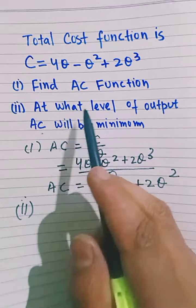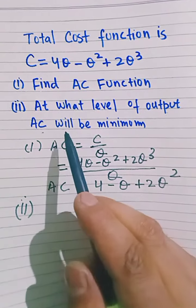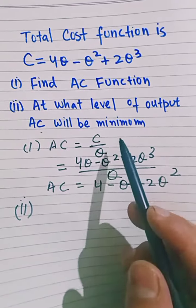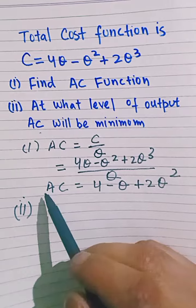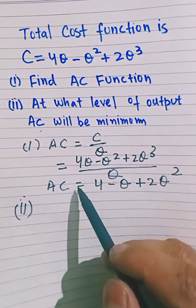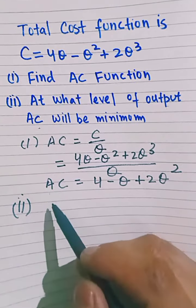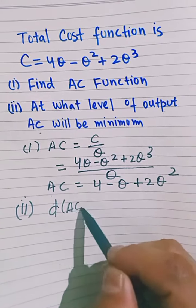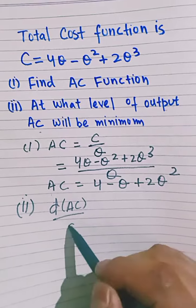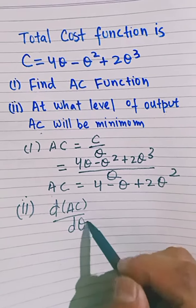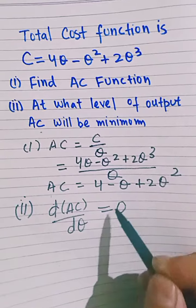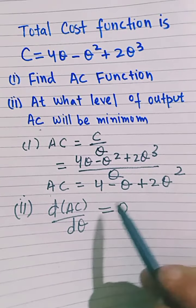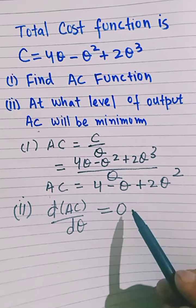The second part tells us to find the level of output where average cost will be minimum. Average cost will be minimum at a point where the derivative of the average cost function with respect to output is equal to 0. So we differentiate the average cost function with respect to Q and set it equal to 0.